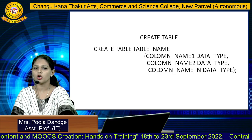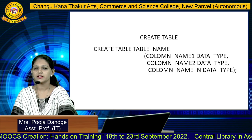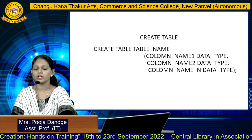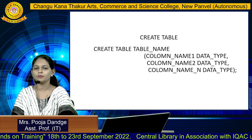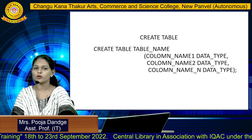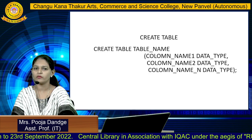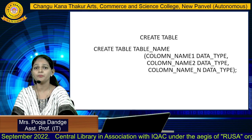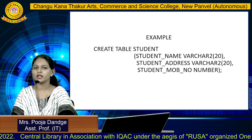You have to specify your column list with their data types. Whenever you specify your column list, you have to give the number of columns. There is no restriction — you can take only one column, two columns, or more.